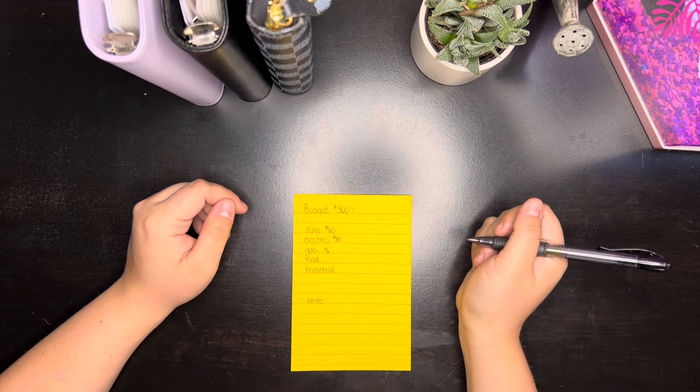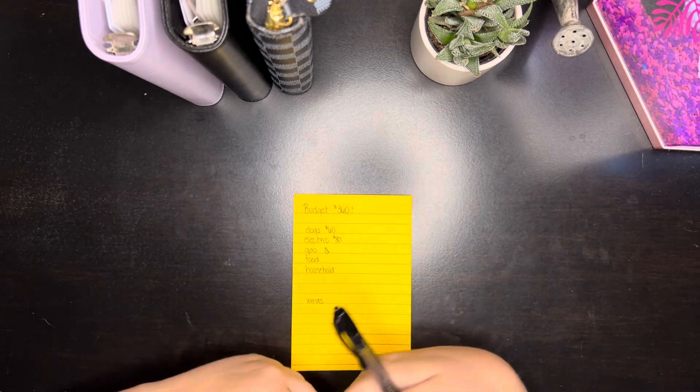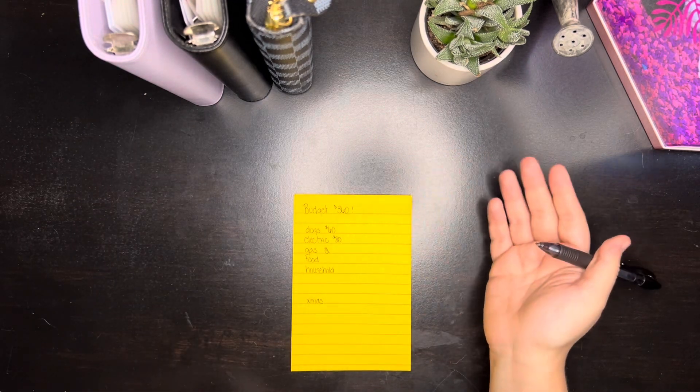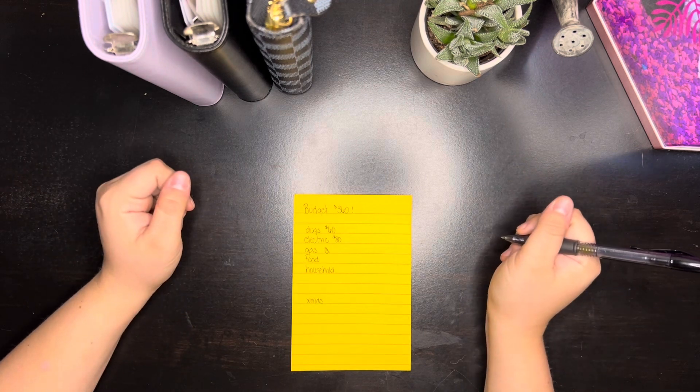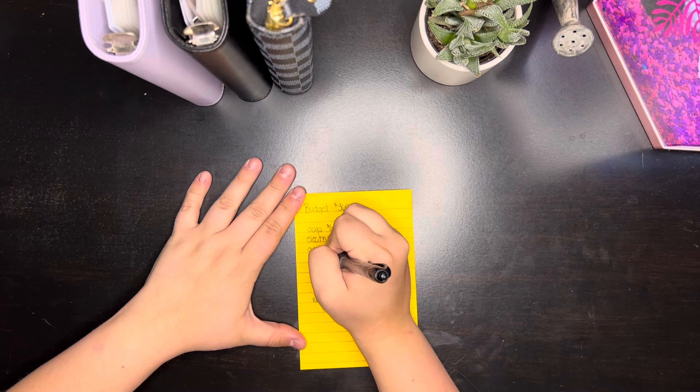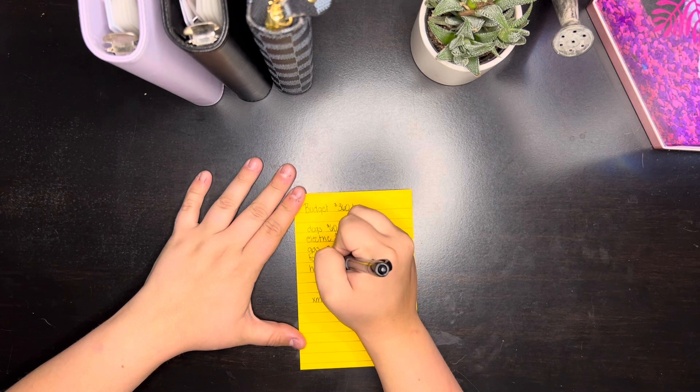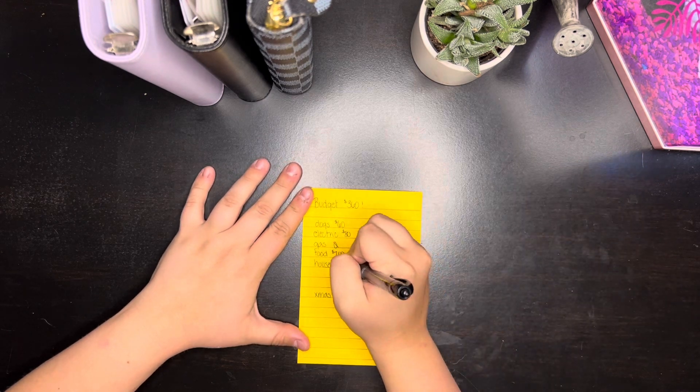But I definitely needed to reel back in a little bit at least until August because August is a three paycheck month for me. And then food is going to get its typical $200 and household is going to get the $20.